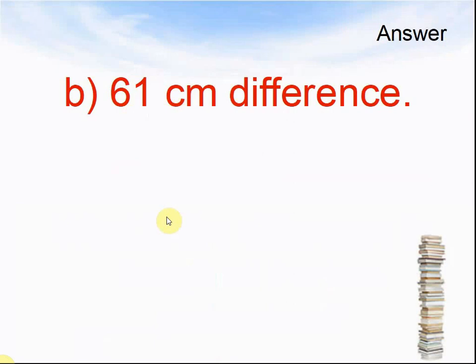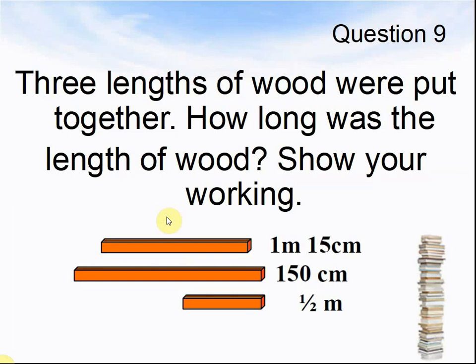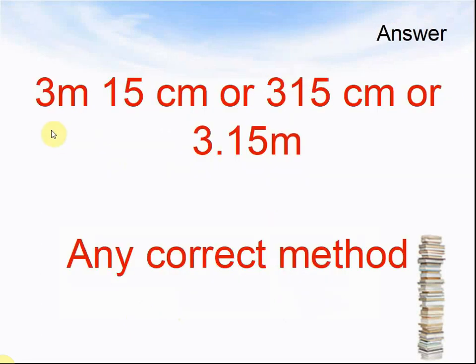Question 9a: three lengths of wood were put together — how long was the total length? Show your working. The first piece of wood was 1m 15cm long, the second piece was 150cm long, and the third piece was half a metre long. Here comes the answer: the answer was 3m 15cm, or 315cm, or 3.15m. Make sure you used a correct method to solve it.